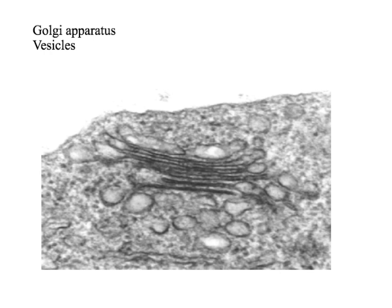This is a Golgi apparatus. You can see it's quite different from the smooth endoplasmic reticulum — you've got clear stacks of membrane. These stacks help to modify proteins by adding sugars. They also package proteins into vesicles; you often see circular vesicles surrounding the Golgi body. The proteins will be packaged inside these vesicles, which will then travel through the cytoplasm and transport the proteins throughout the cell.